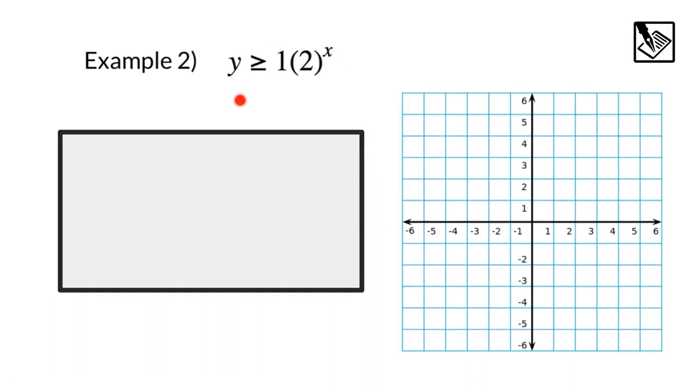Example two, y is greater than or equal to one times two to the x power. This looks like an exponential. So the y intercept is at one. I'll put my first point there. And it looks like my multiplier is two, which means it's going to be exponential growth. And one times two is two, that'll be my next point. Two times two is four, that would be my next point. And we can see we kind of get a general shape of the exponential.